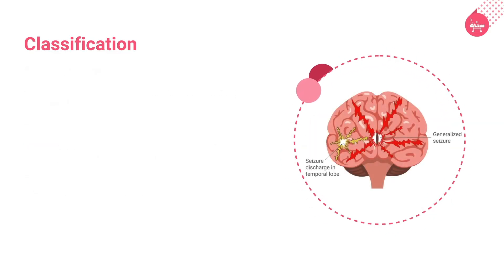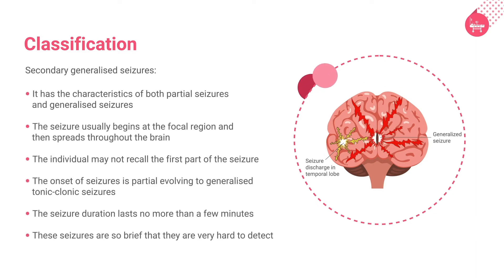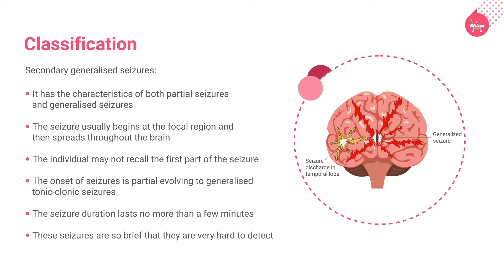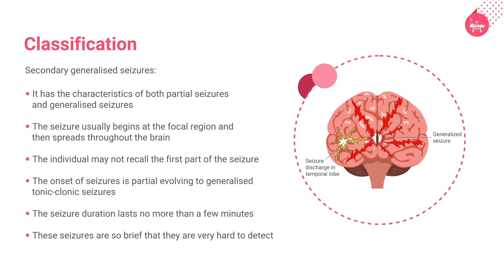The third category under partial seizures is secondary generalized seizures, which has characteristics of both partial and generalized seizures. The seizure begins at the focal region and then spreads to the entire brain. The patient may not recall the initial event. The onset is partial initially, which progresses to generalized tonic-clonic seizures. The seizure duration lasts no more than a few minutes, and these seizures are so brief they are very hard to detect.